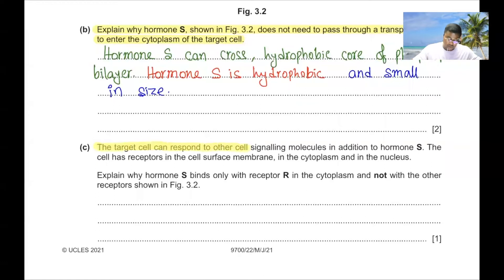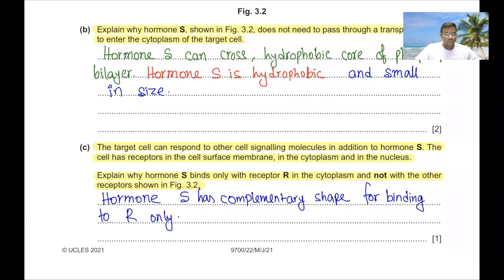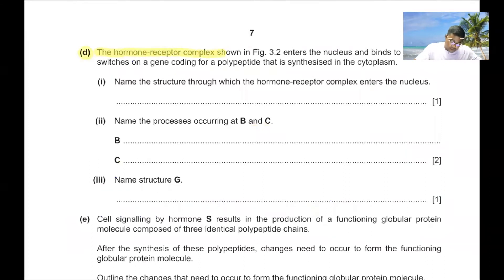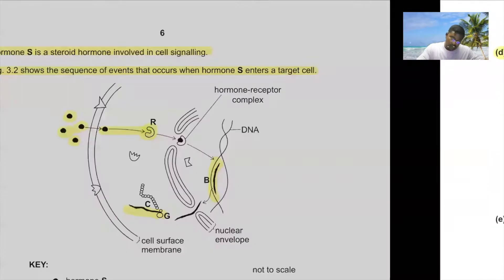Part C. The target cell has receptors in the cell surface membrane, cytoplasm, and nucleus. Hormone S binds only with receptor R in the cytoplasm and not with other receptors because hormone S has a complementary shape for binding to R only. Part D. The hormone-receptor complex enters the nucleus through the nuclear pore to bind to DNA and switch on a gene coding for a polypeptide.